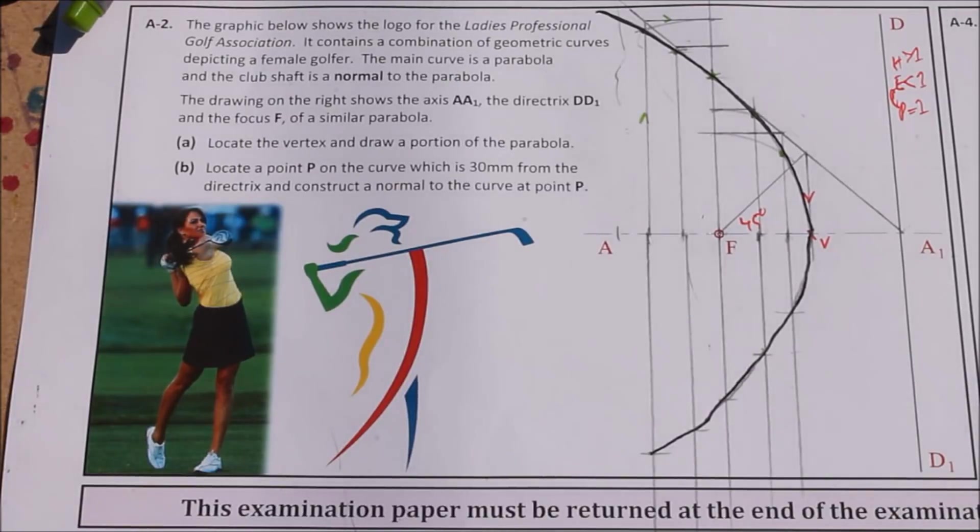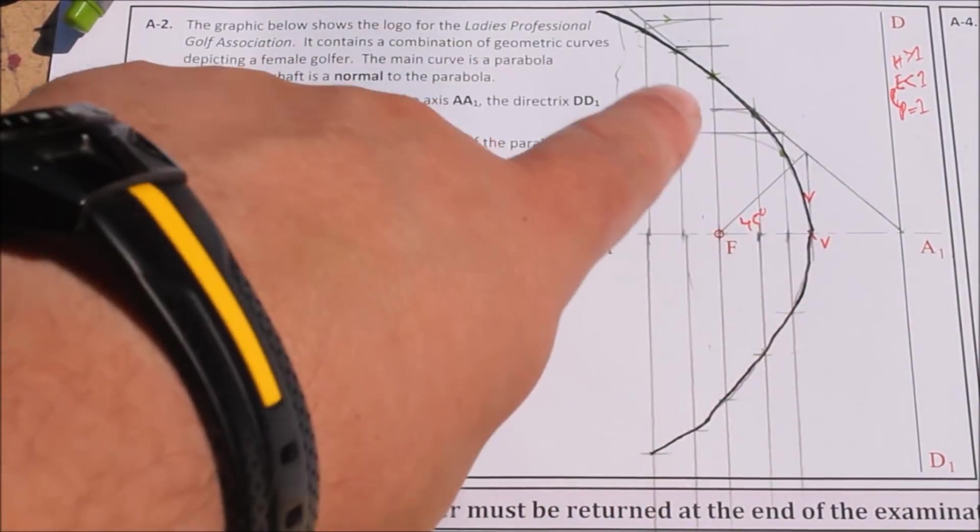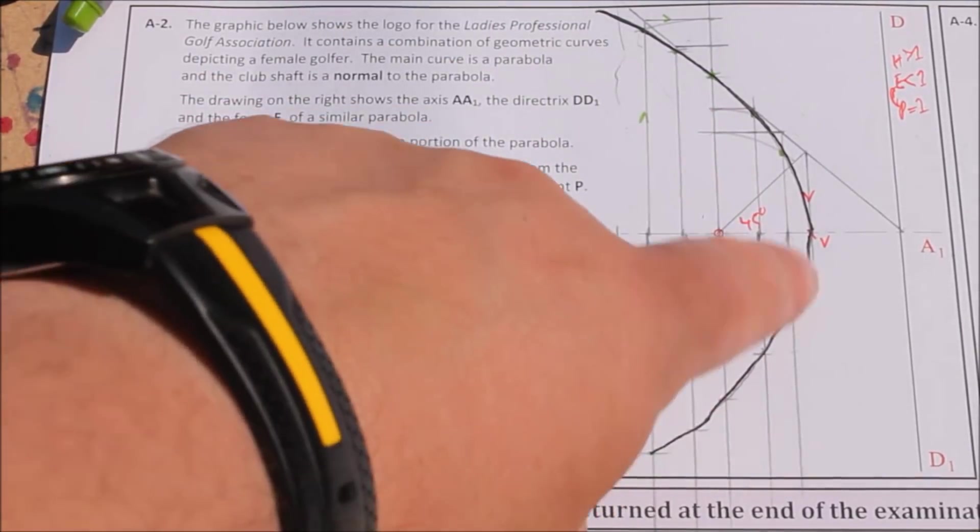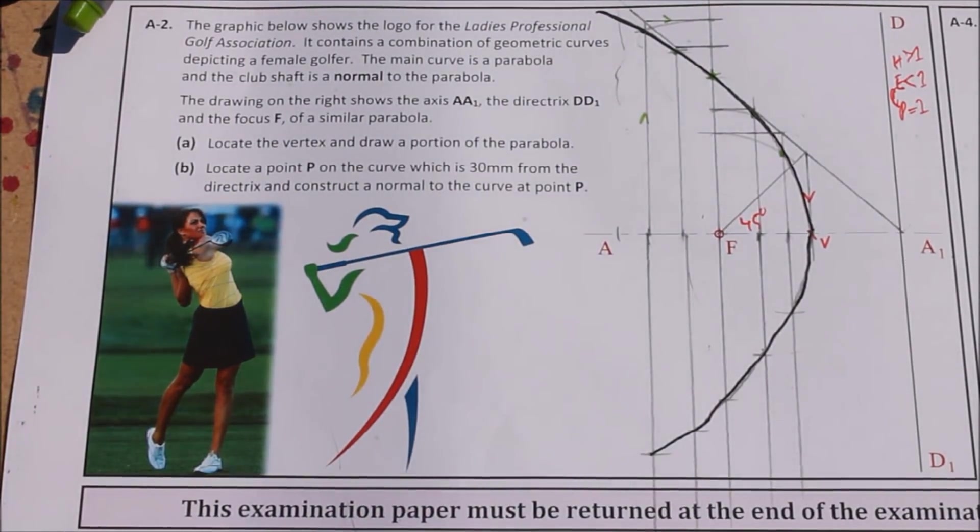Okay, and to finish the portion of the curve in any of these questions, they're symmetrical from the axis. So once you do one side here at the top that we did, just use axial symmetry to project your points back down here to the bottom of it. So that's part A done, that is locate the vertex and draw a portion of the parabola.